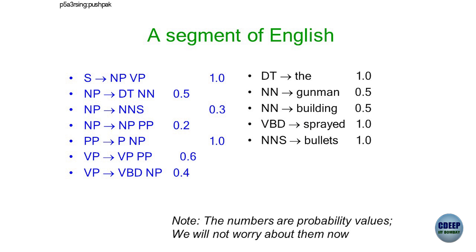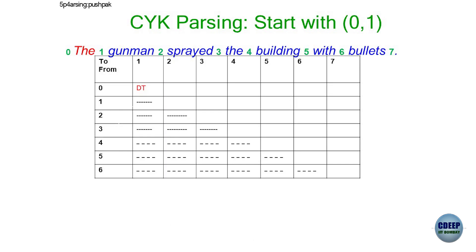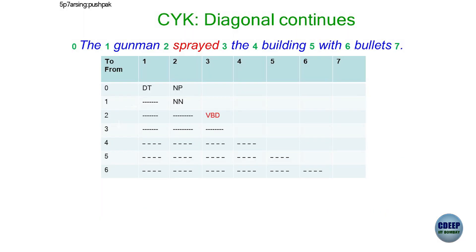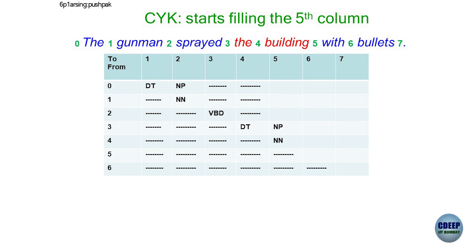Parsing is controlled by a grammar, and grammars these days come with probability values — 1.0, 0.5, 0.3, etc. One of the parsing algorithms we will study is CYK parsing, which works with a matrix where words are progressively grouped together — first 'the gunman' is grouped, then 'sprayed,' then 'the building,' and we finally get the parse tree. CYK parsing is a very elegant method of parsing.